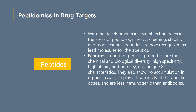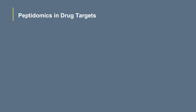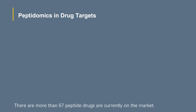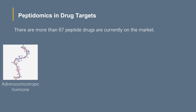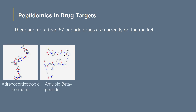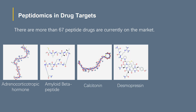However, there are some drawbacks. They have low stability in body fluids and difficulty in transporting them to target organs. There are more than 67 peptide drugs currently on the market. Some examples of the therapeutic potential of endogenous peptides include adrenocorticotropic hormone, beta-amyloid peptides, calcitonin, desmopressin, and so on.